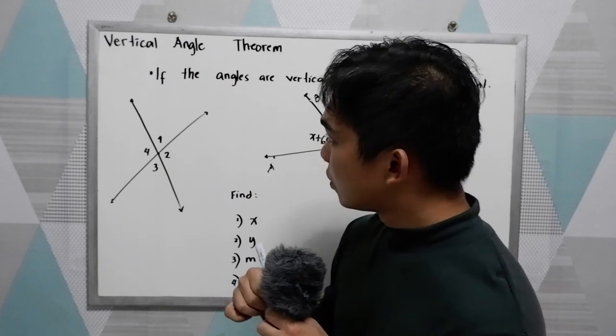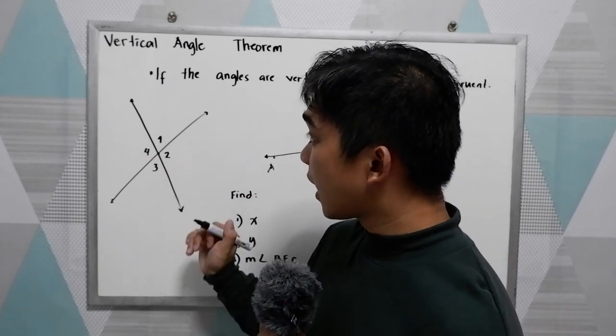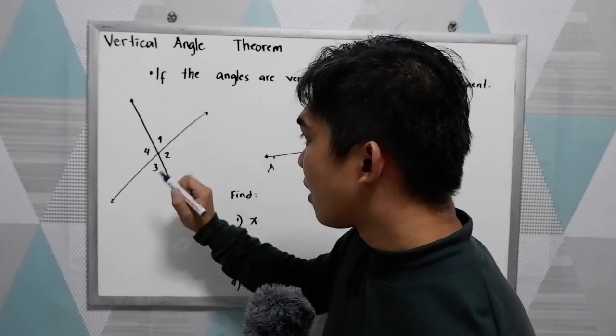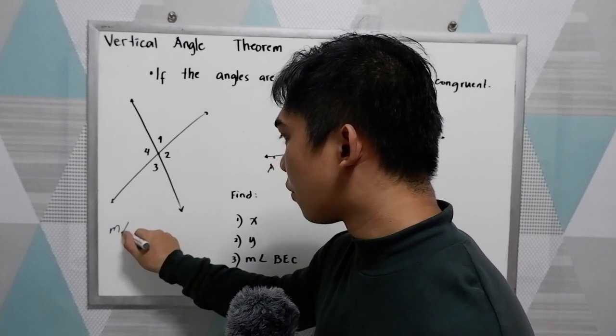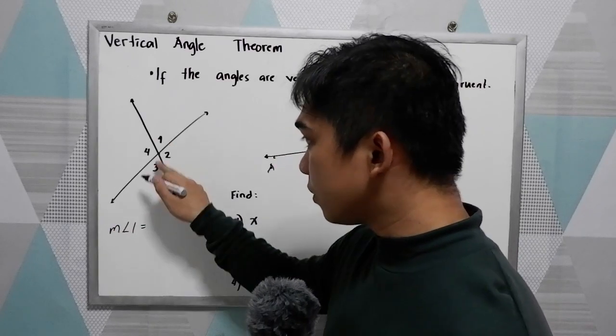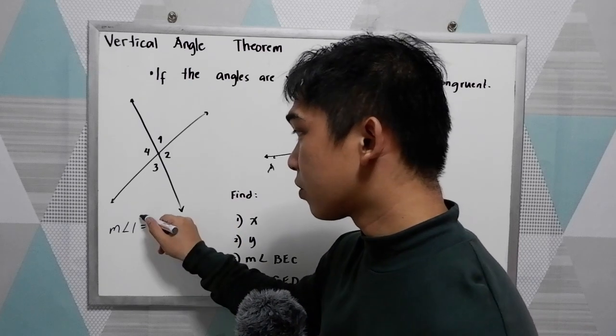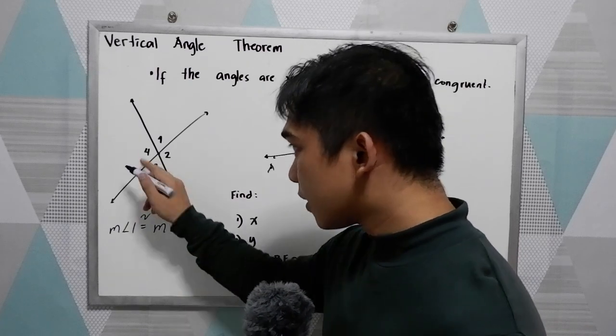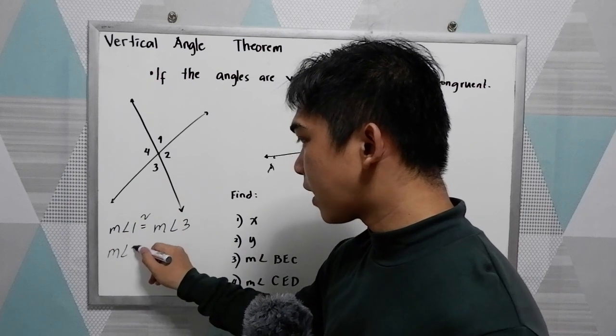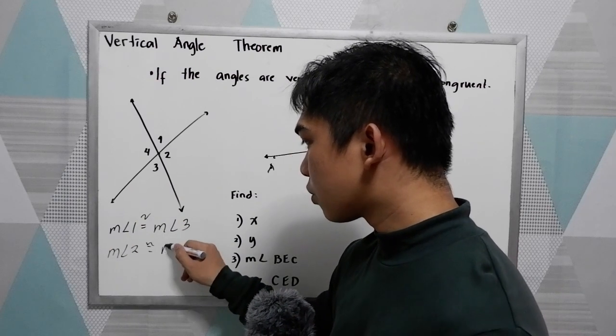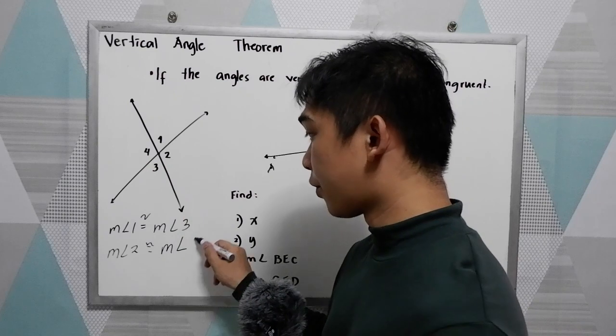These are examples of vertical angles. That means the measure of angle 1 is equal to the measure of angle 3, or congruent. That means the measure of angle 2 is congruent to the measure of angle 4.